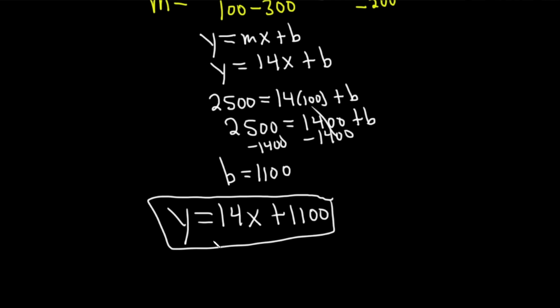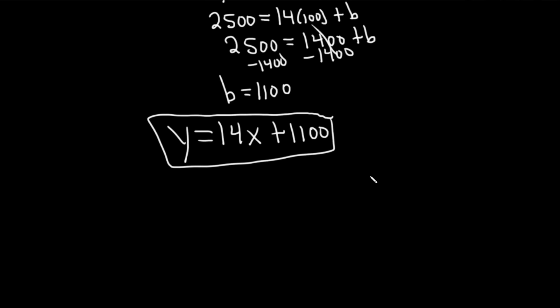You know, we can check our answers, and I'm going to show you how to do that because I think it's useful. It's really easy to mess up when you have so many numbers. So I'm just going to write down the numbers we had before. So you see them on the screen. We had two ordered pairs that we came up with. The first ordered pair was 100, comma, 2,500. And the other ordered pair was 300, comma, 5,300.